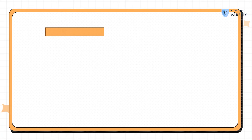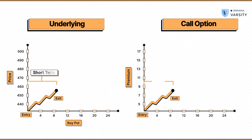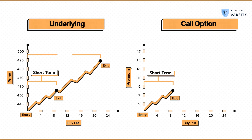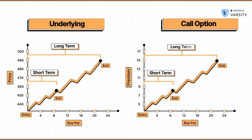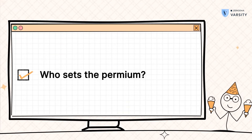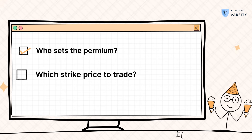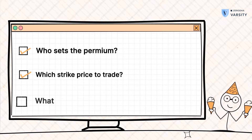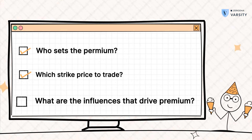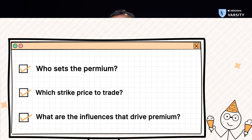The point that I'm trying to make here is that the premiums continuously change. Based on the change in premium, you can decide to stay in the trade for a longer time or you can just choose to exit the trade as and when you think is appropriate. Now, the bigger question that you need to ask is: who sets the premium value? Who is it that decides for a given strike that the premium should be 50, 100, or 200? What are the influences that drive these premium values up? Let's learn all these things in the upcoming videos.